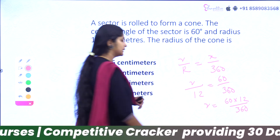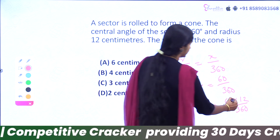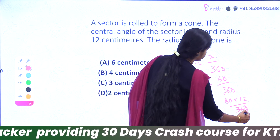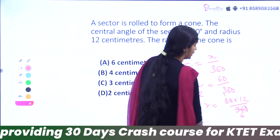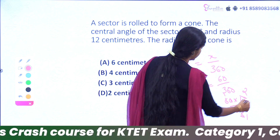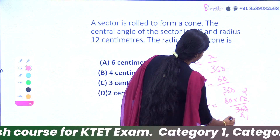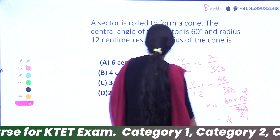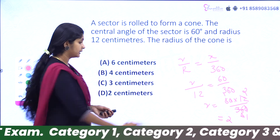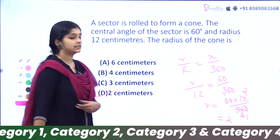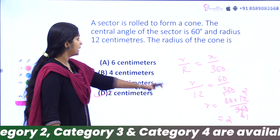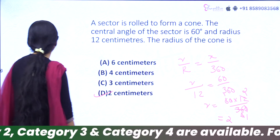So we calculate: 60 times 12 divided by 360. Simplifying, we get the radius of the cone equals 2 centimeters. The question is now clear.